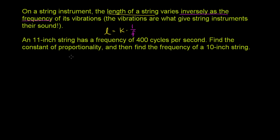An 11-inch string has a frequency of 400 cycles per second. So this right here is the frequency. A cycle per second is also called a hertz.